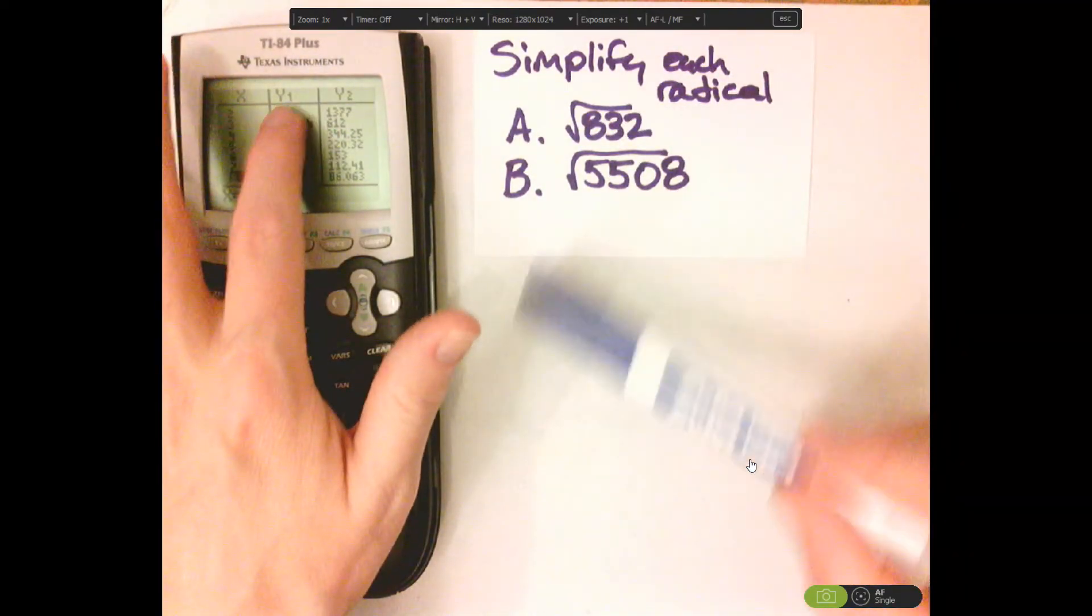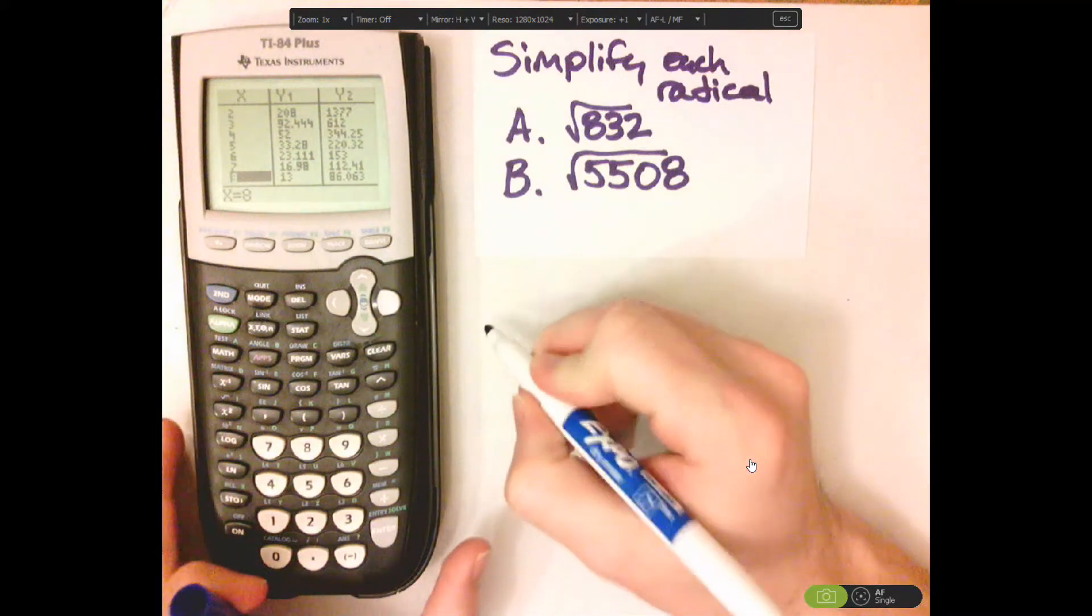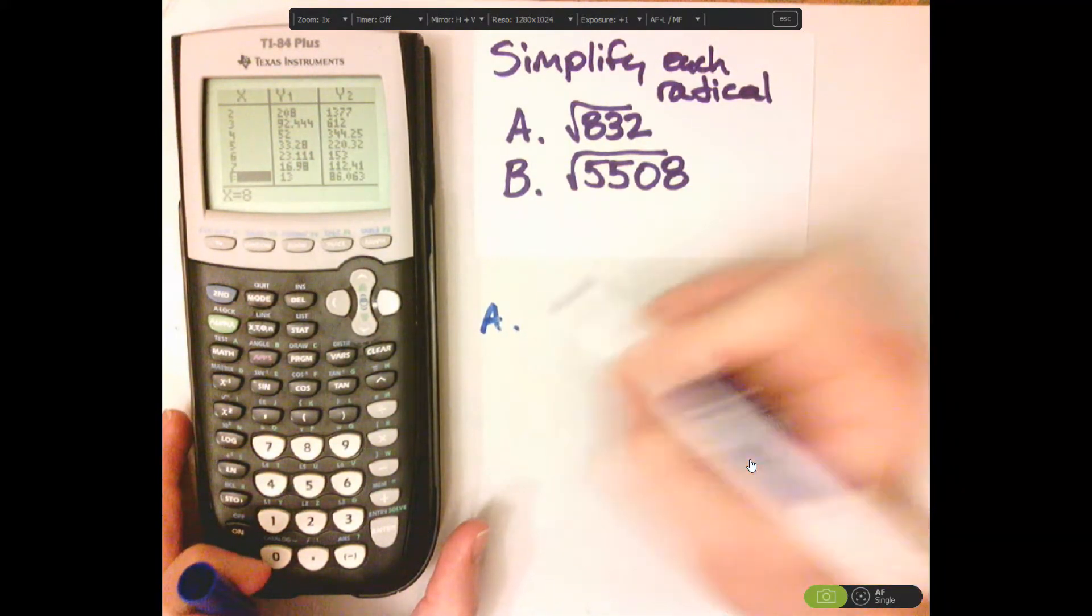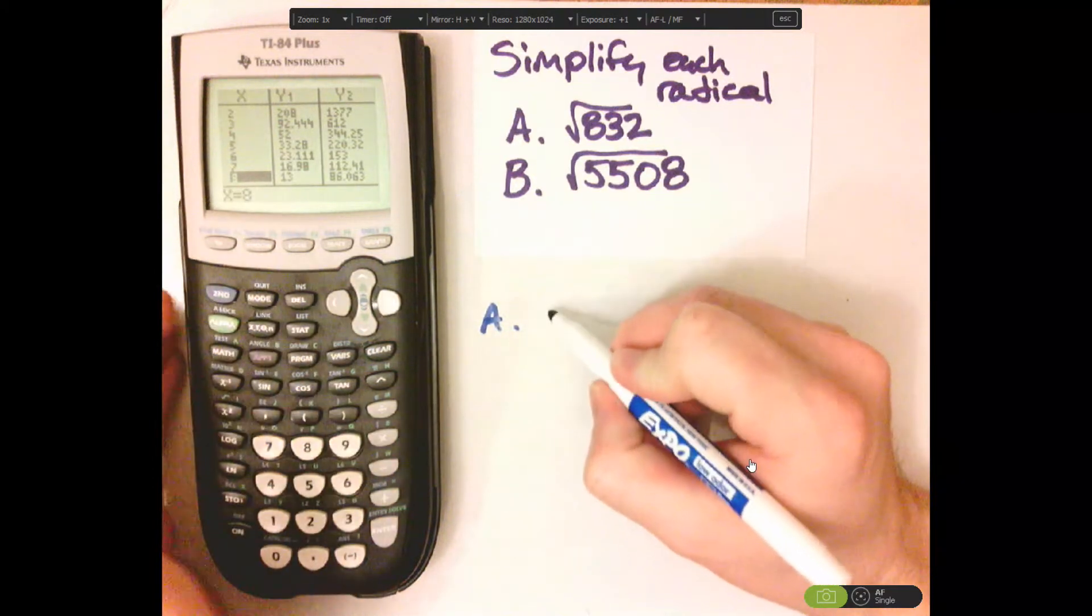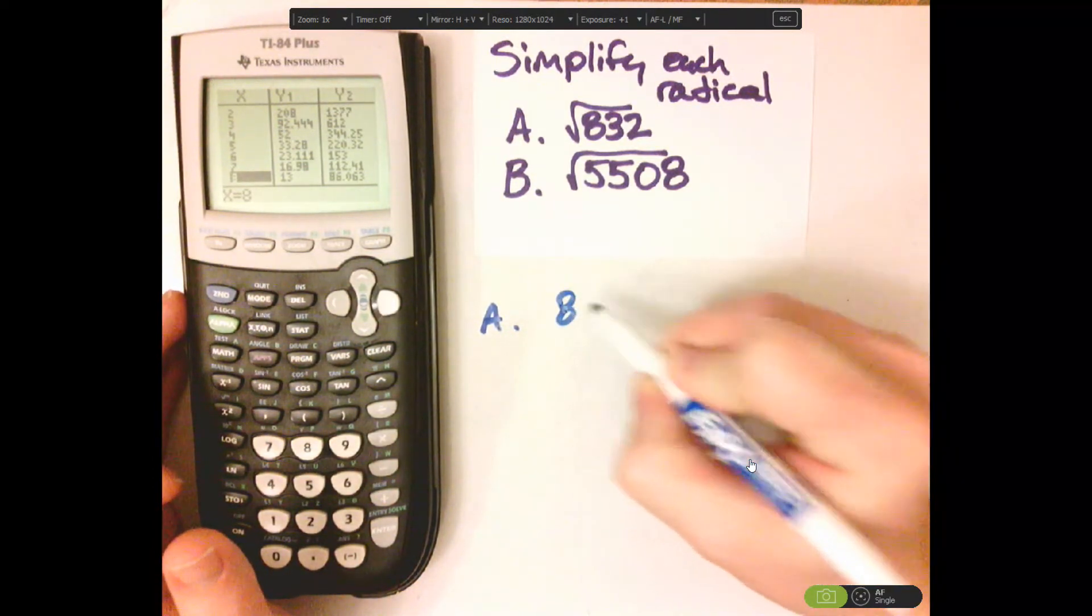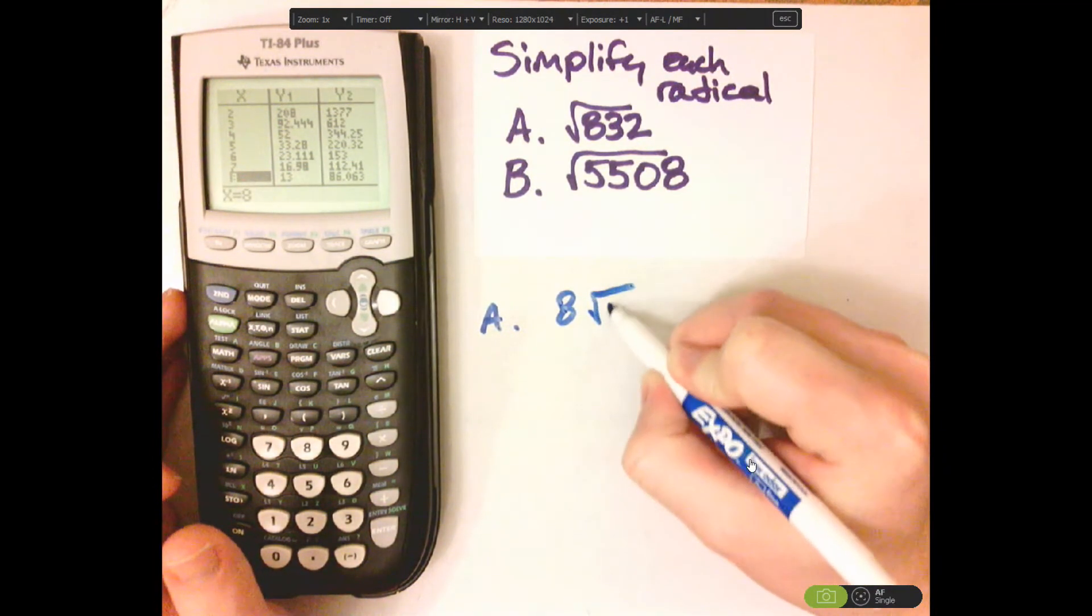Remember that Y1 was letter A, so letter A, the largest square that goes into that is 8. So that's 8 square root of 13.